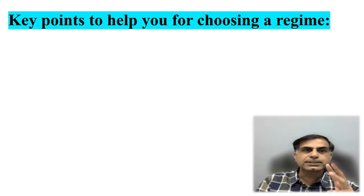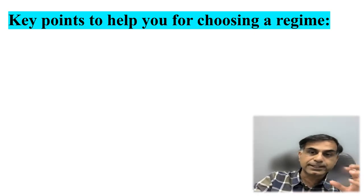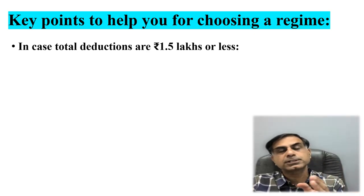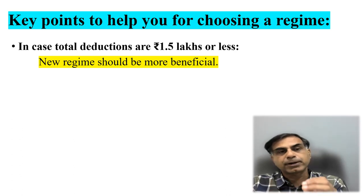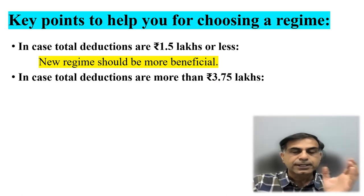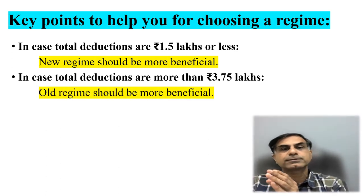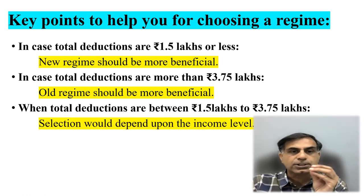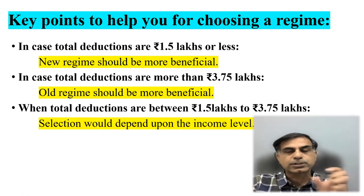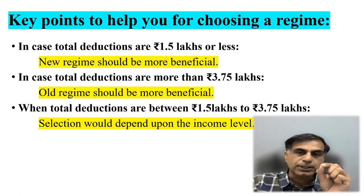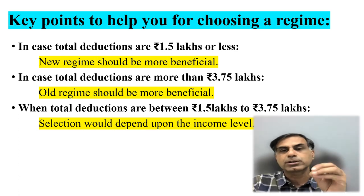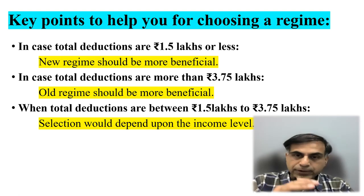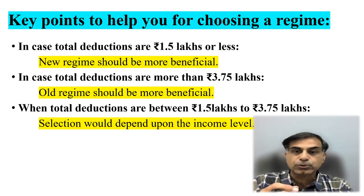Now, three key points to help you choose a regime. First, if your total deductions are 1.5 lakh or less, by default the new regime should be more beneficial. Second, if your total deductions are more than 3.75 lakh, the old regime should be more beneficial. Third, when your total deductions fall between 1.5 lakh and 3.75 lakh, the selection depends upon both your income level and the actual contributions made towards tax-saving incentives.